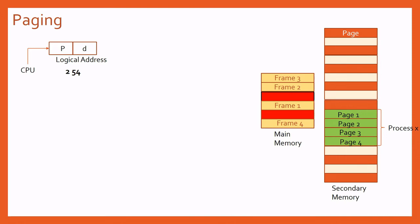Now notice something important. If we want to go to page 2, 54th location, and page 2 is stored in frame 2 of main memory, then the physical address is frame 2, 54th location. The offset does not change because the size of page and frame are equal. The position within the page maps directly to the same position within the frame. So the offset D remains the same in both logical and physical addresses.